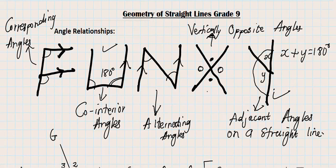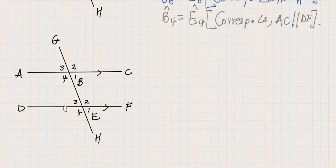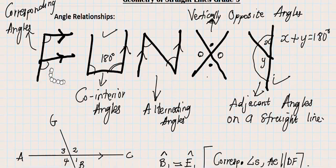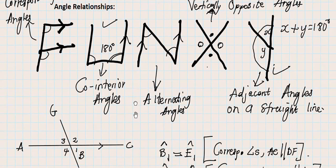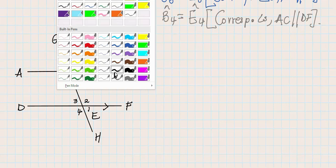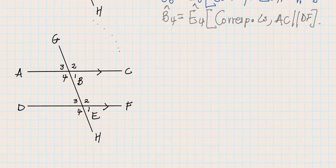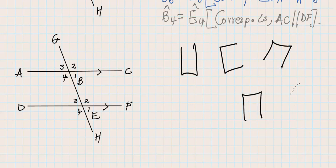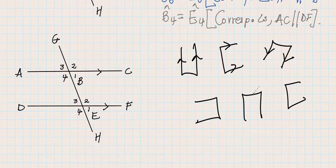Whenever we are working with co-interior angles we need a U-shape or a C-shape. Regardless of where it's facing, as long as it looks like a U-shape, then for us it's a co-interior angle. But that U-shape must have parallel lines — if the lines are parallel then it works, but if you don't have parallel lines then it wouldn't work.